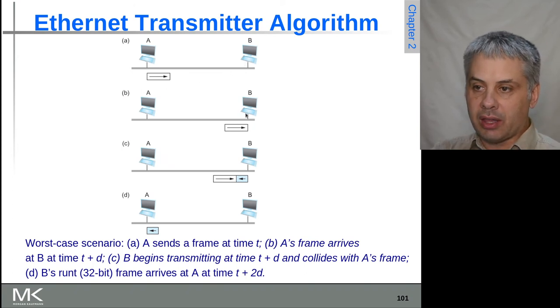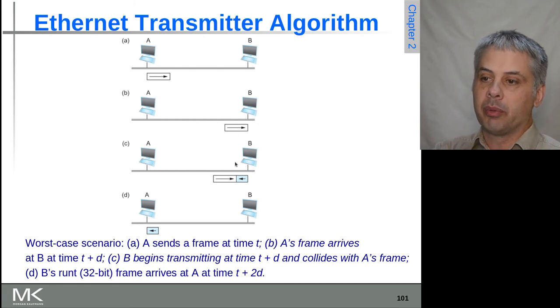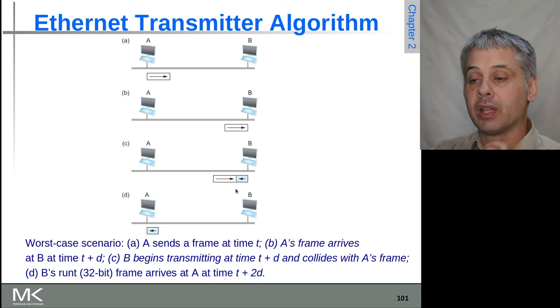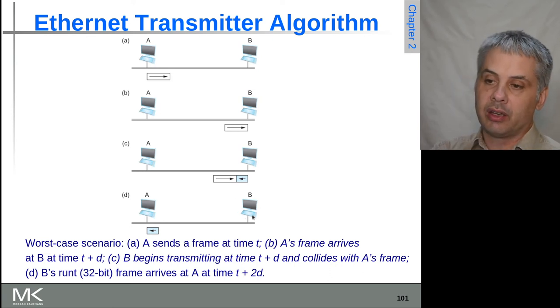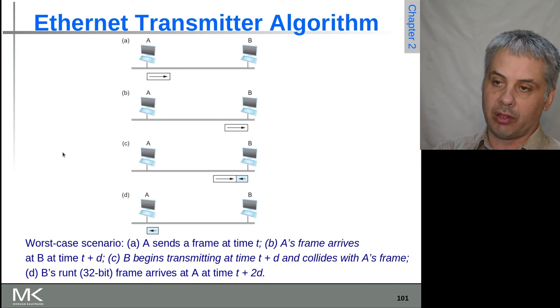If we look at that pictorially, so A sends to B at time t, and then at t plus d that frame arrives at B. But B has already started to begin sending a frame, and so we get a collision. That collision is detected at roughly t plus d, because it's when B first realizes that the transmission from A is coming in even though B has already started to try and send a frame. So it will send the jamming signal, and then eventually that will come back at another latency of d, so t plus 2d back to A. So A will realize at that point that a collision has occurred.